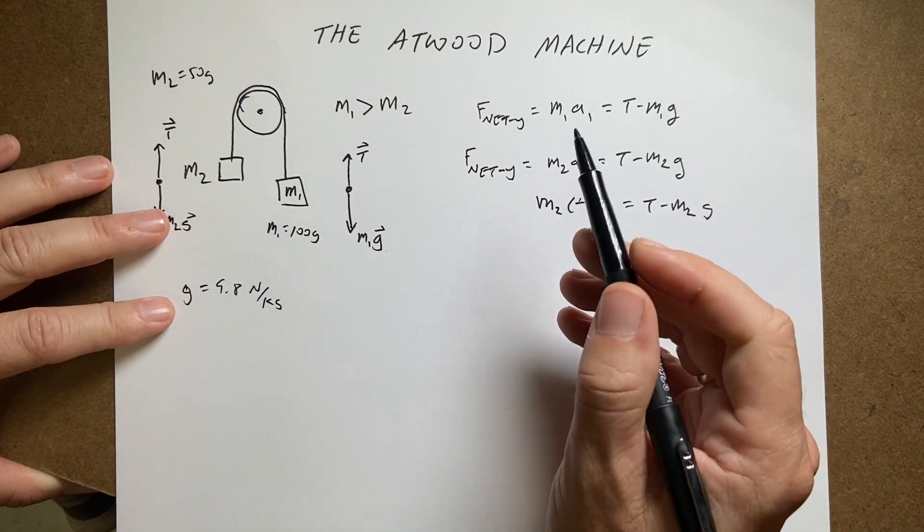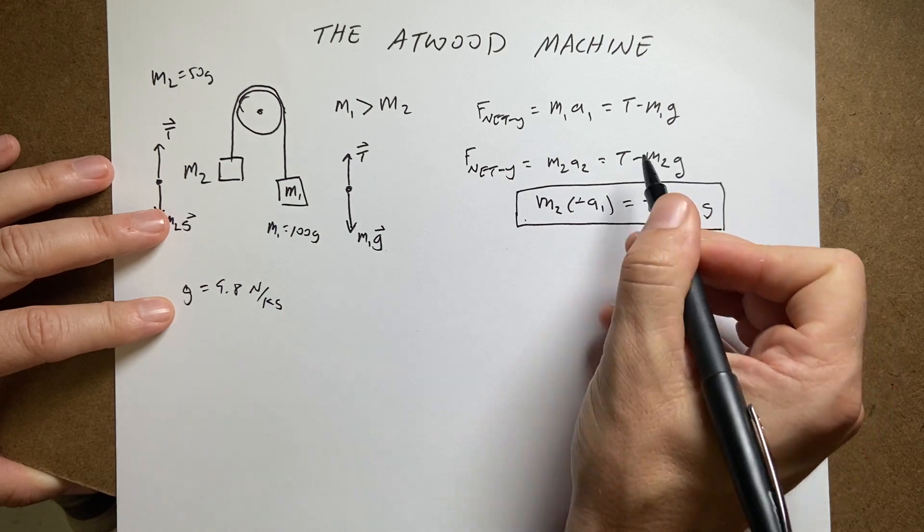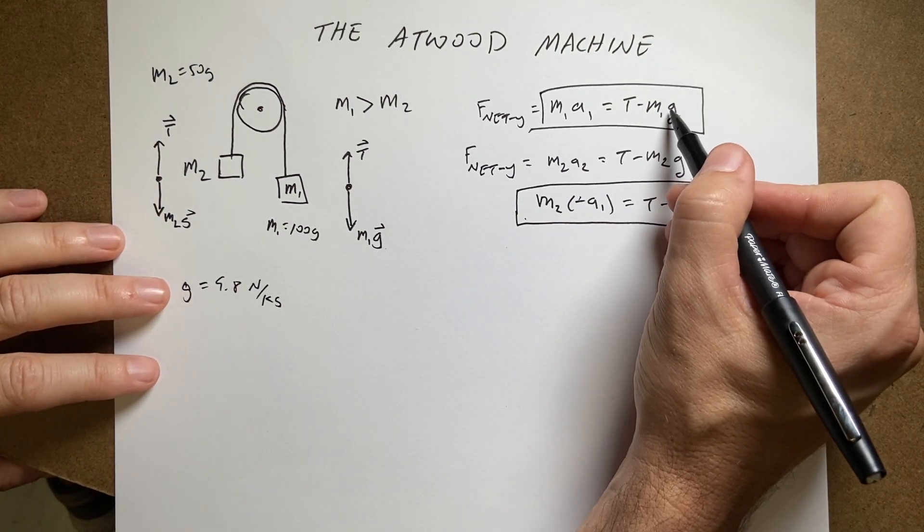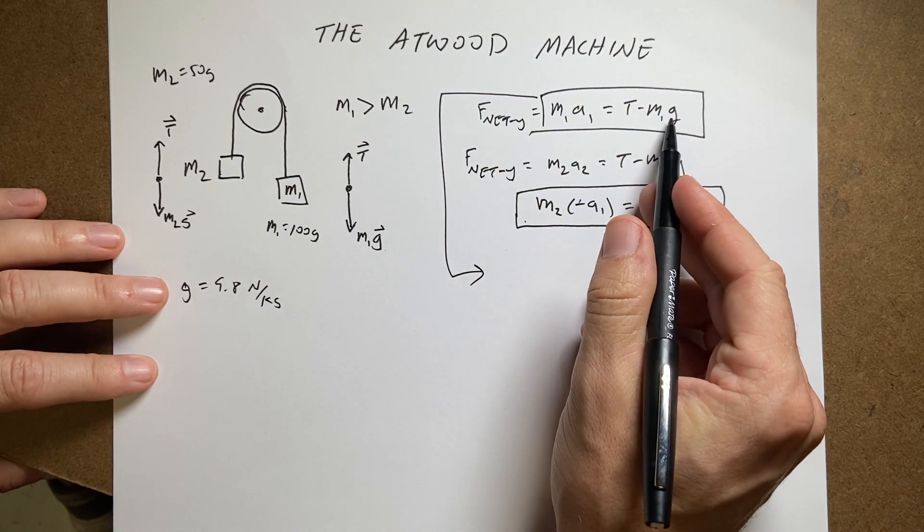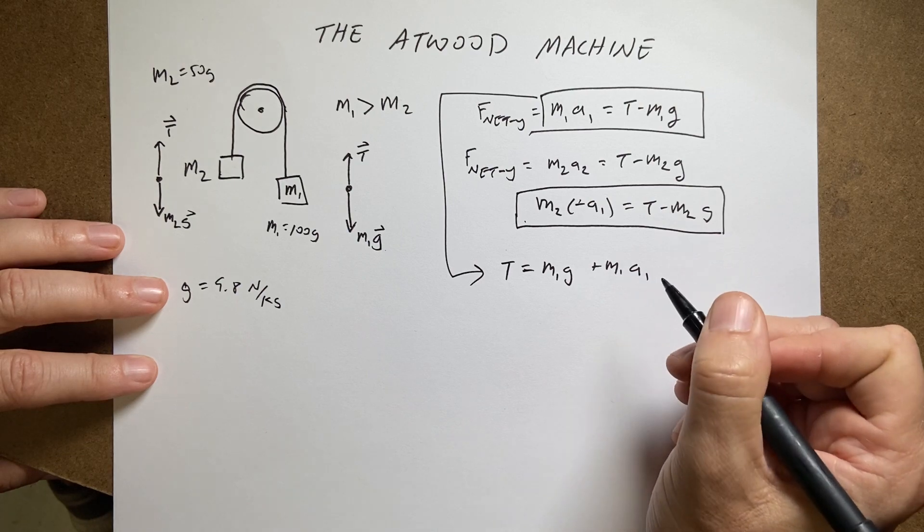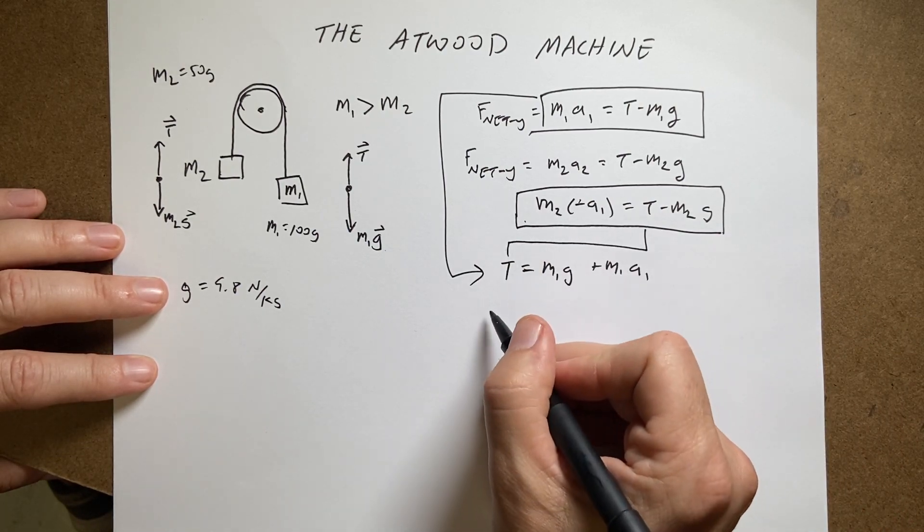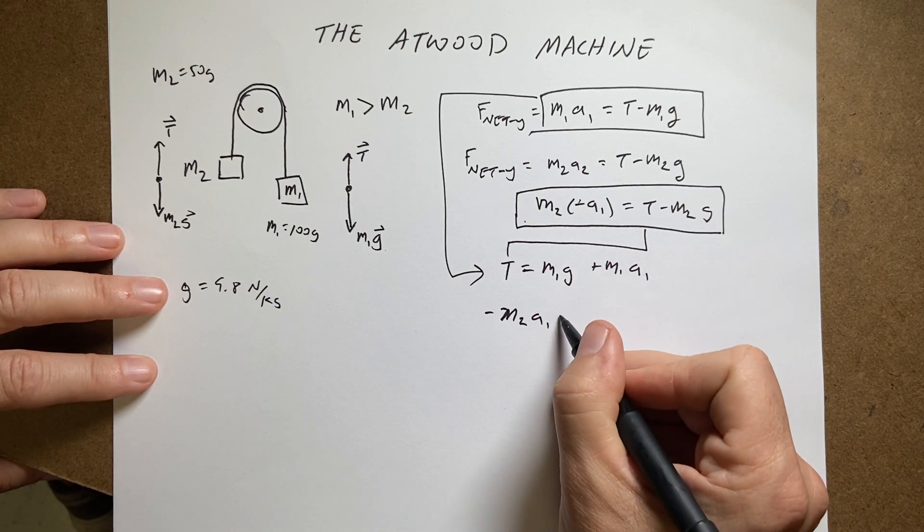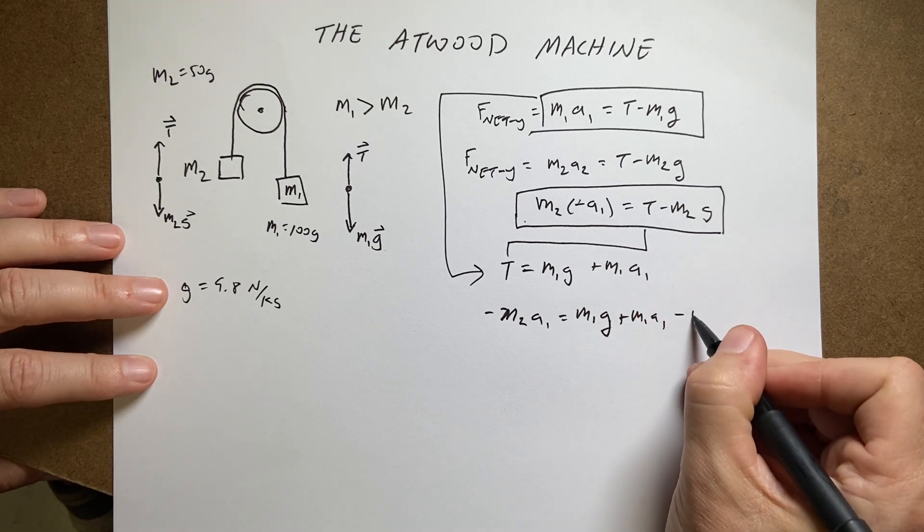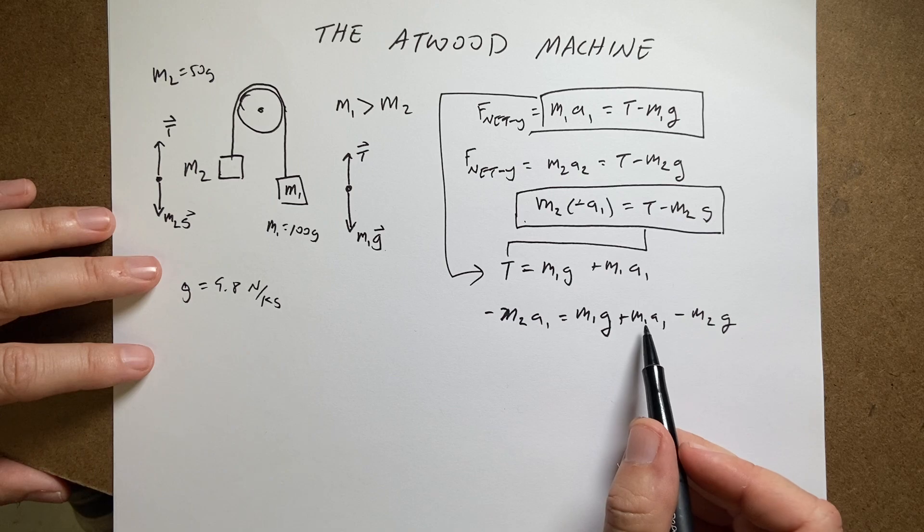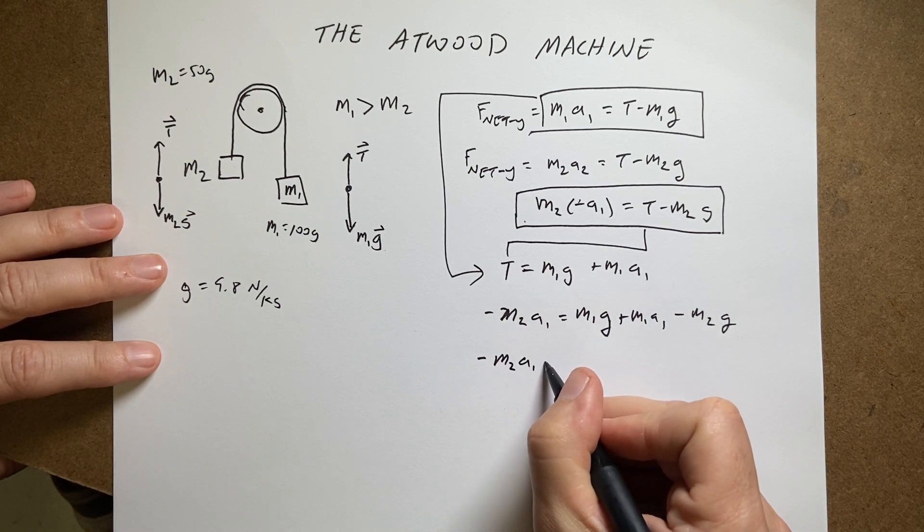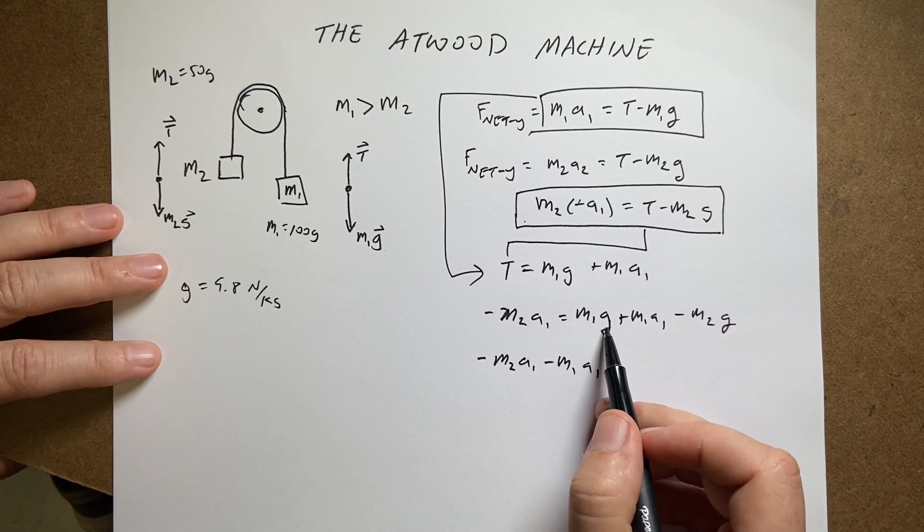I now have two equations. I have this equation and I have this equation. And I have two variables, T and a1. So I can solve two equations, two unknowns. So let's take this one and solve it for T. So if I do that, I add m1 g to both sides. I get T equals m1 g plus m1 a1. Now I can substitute this in up there. And I get negative m2 a1 equals, now I'm going to put this in for T, m1 g plus m1 a1 minus m2 g. I want to get all the a terms on one side. So I'm going to subtract m1 a1 from both sides. I get minus m2 a1 minus m1 a1 equals, now I have m1 g minus m2 g. So I'm going to write that as m1 minus m2 g.